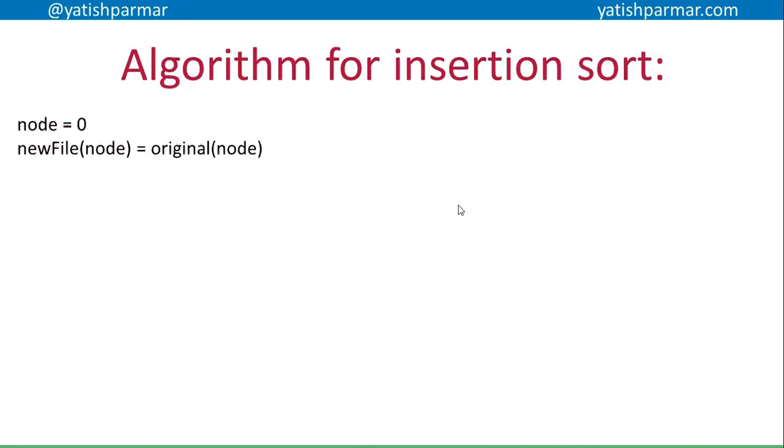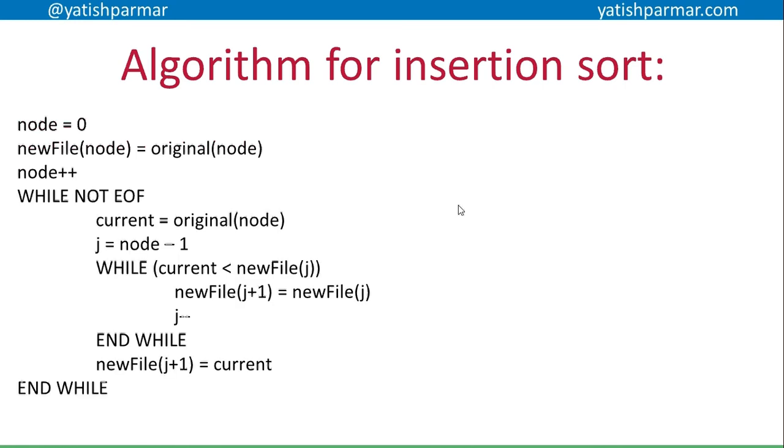So what does that look like? First of all, I'm going to set my node as zero. Here I'm working on a zero-based index. So my new file zero is going to be equal to the original zero. I have to copy at least one item over before I can start doing any form of comparison.